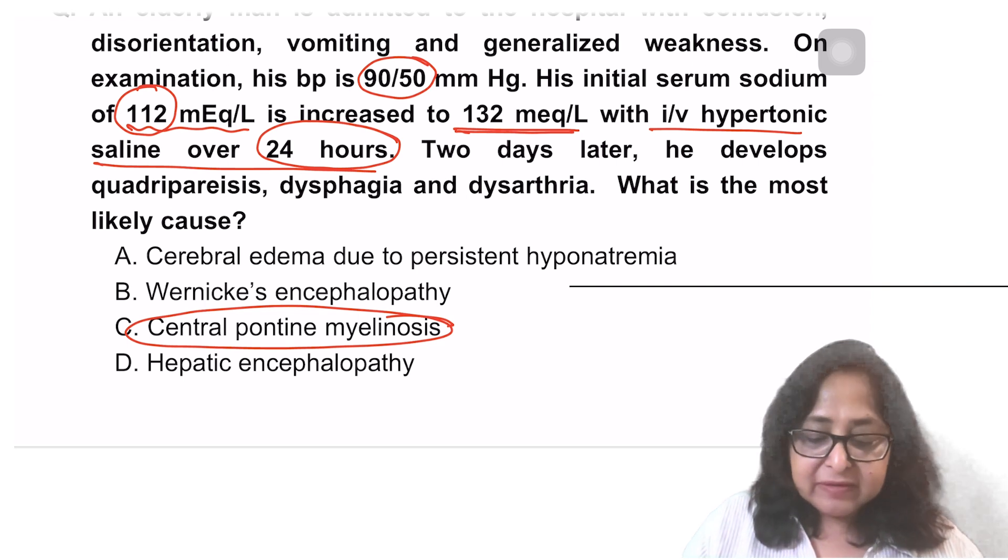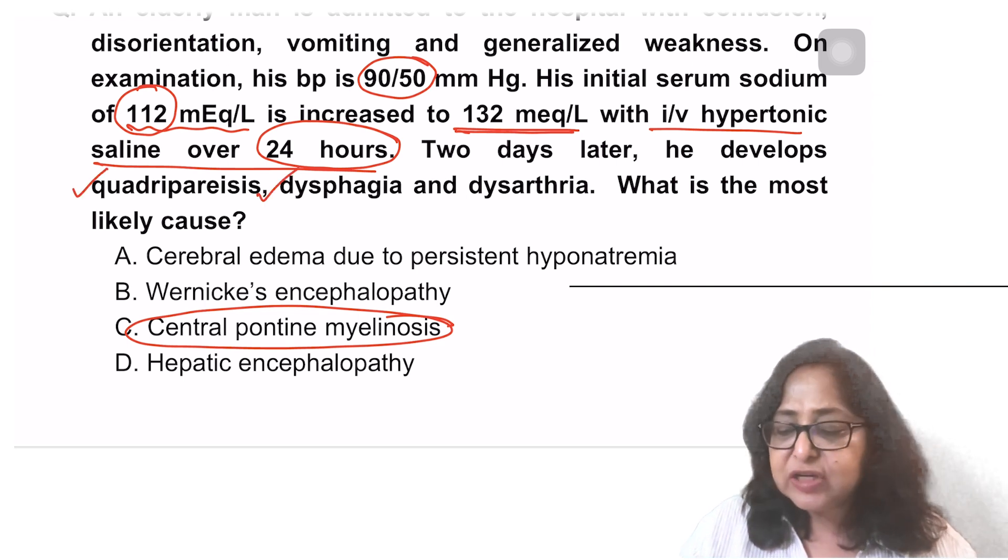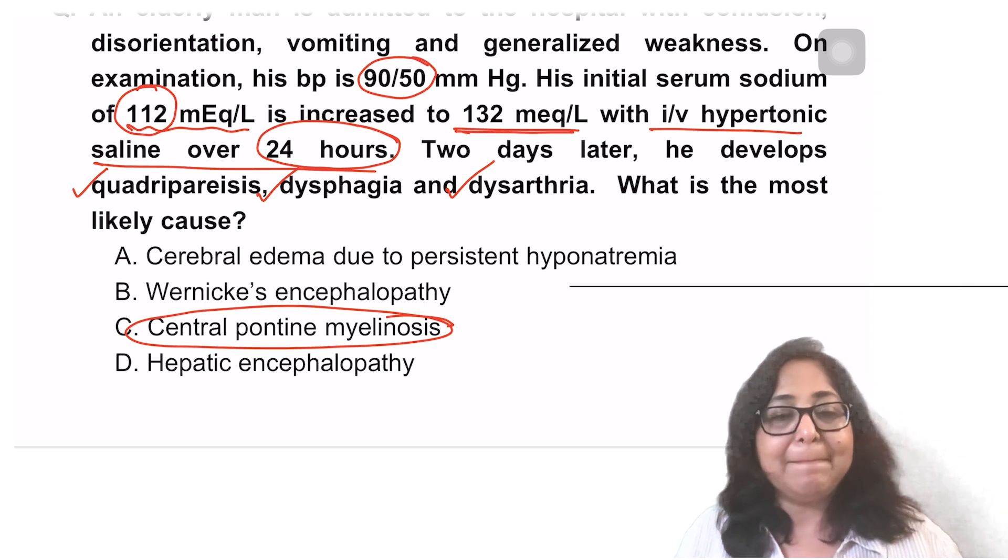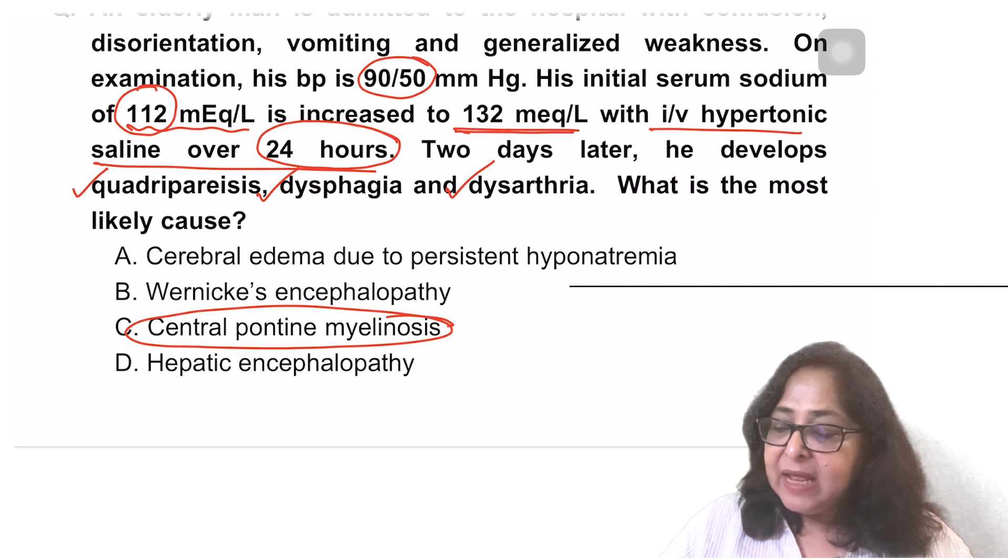And that results in a central pontine myelinosis. The myelin in the pons starts getting disintegrated and that has multiple symptoms like there is quadriparesis, there is dysphagia, there is dysarthria. So, this points towards a central pontine myelinosis.